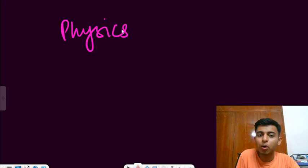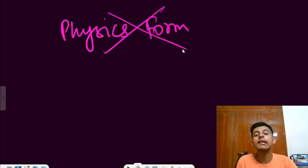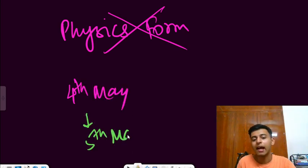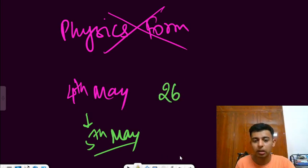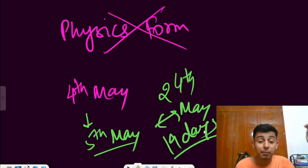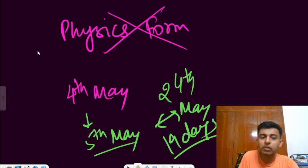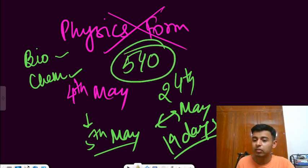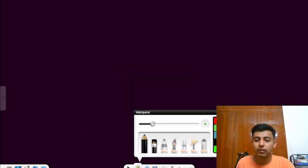And one very important announcement that I wanted to make: the physics formula sheet has been cancelled. Reason is that, see, I left studying physics on 4th of May. The last time I applied physics was on 5th of May, and say it's 24th of May, so there has been a gap of 19 days because of which I've started forgetting and it's becoming very difficult for me to do it. So physics I won't be able to help you. I'll definitely help you in biology and chemistry.